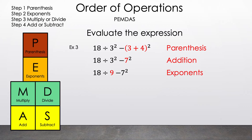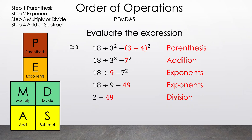3 squared is 9, so now we have 18 divided by 9 minus 7 squared. And 7 squared is 49, so now we have 18 divided by 9 minus 49. We have to decide whether to do division or subtraction first. Since division comes before subtraction in the order of operations, we divide 18 by 9, which gives 2. So now we have 2 minus 49, and the result is negative 47. That is our answer for example three.